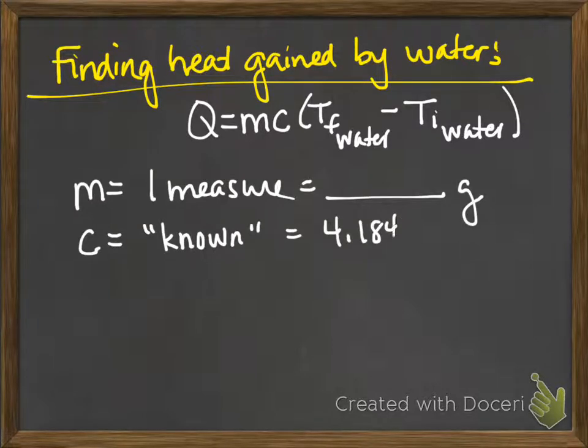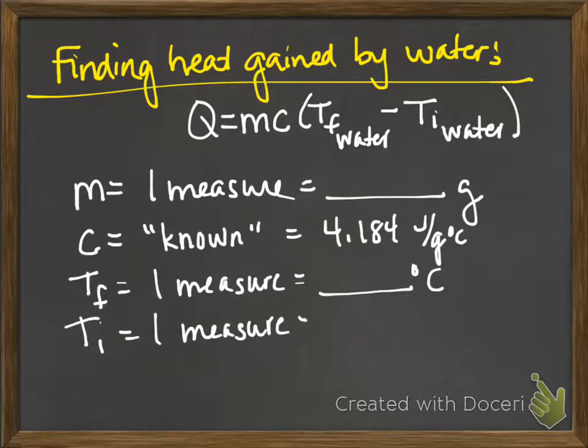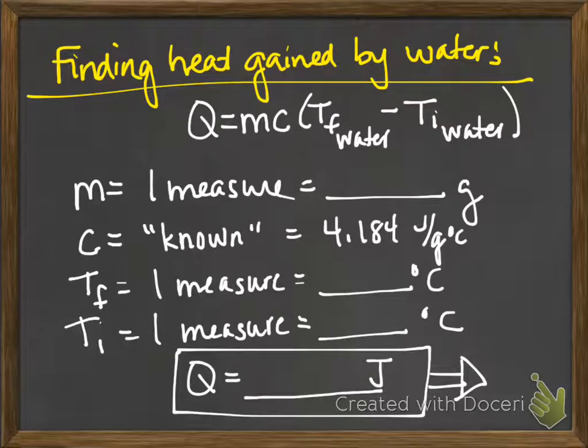I can measure the mass of the water. I already know the specific heat of water, and then I can measure both the final and the initial temperatures of the water. Once I have all that information, then I can calculate Q. And so Q is the amount of heat gained by the water, and that Q should have a positive value.